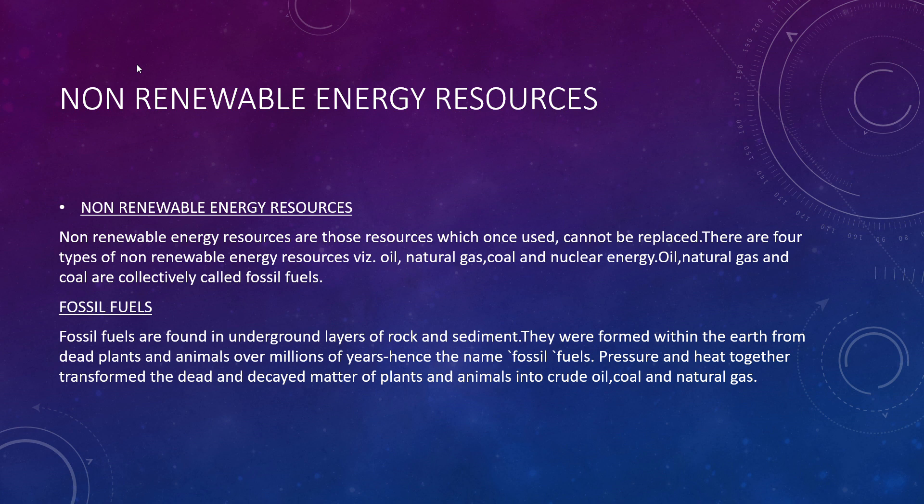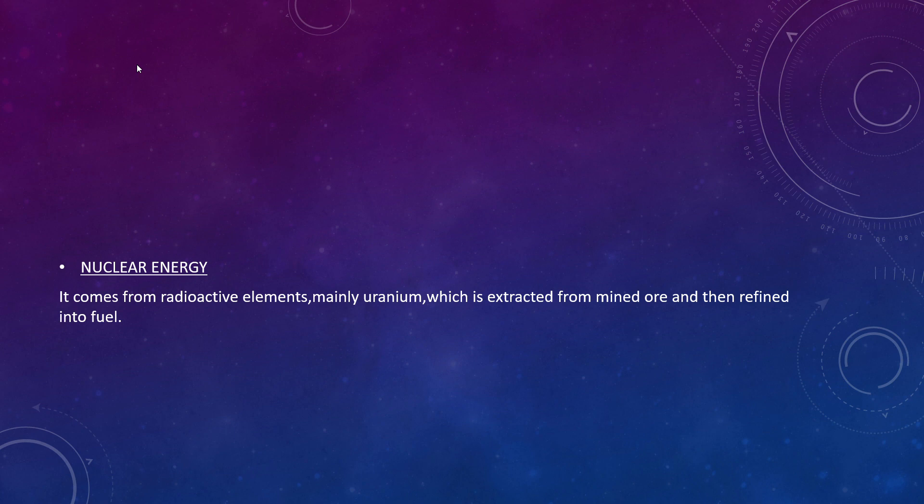Nuclear energy uses the energy in the nucleus of an atom. It uses nuclear reactions such as nuclear fission and nuclear fusion to produce electricity, and it comes from radioactive materials like uranium and plutonium.